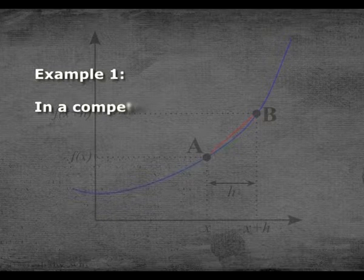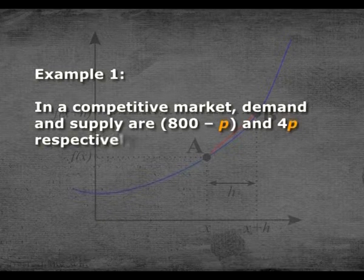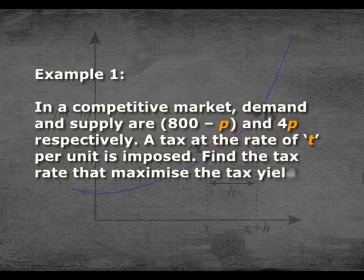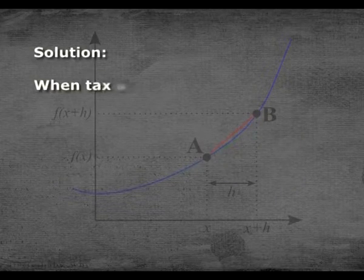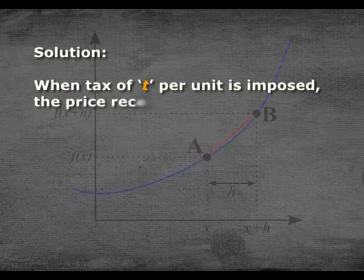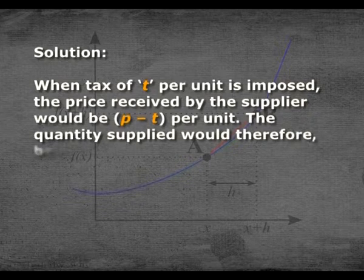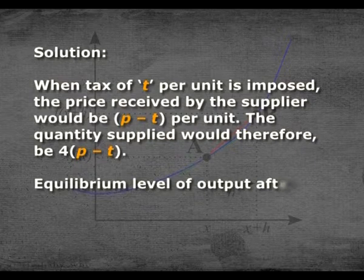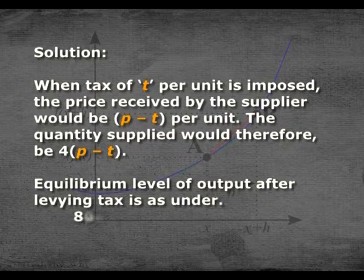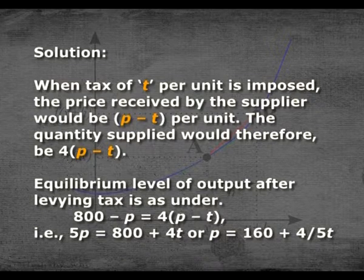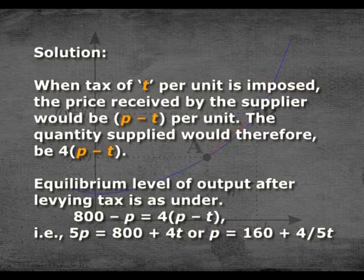Now let us see an example. In a competitive market, demand and supply are 800 − P and 4P respectively. A tax at the rate of t per unit is imposed. Find the tax rate that maximizes the tax yield. When a tax of t per unit is imposed, the price received by the supplier would be P − t per unit. The quantity supplied would therefore be 4(P − t). Equilibrium after imposing tax: 800 − P = 4(P − t), so 5P = 800 + 4t, giving P = 160 + (4/5)t.